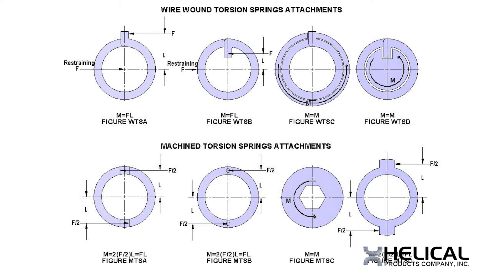The third diagram shows an internal hex attachment. This class of attachment is very effective in providing a pure moment. It could also be a spline, a round shaft with a keyway or keyways — all of these provide pure moments. The last diagram on the lower right demonstrates the use of two external tangs. This classic use of a couple or pure moment attachment is free of the need of a resolving force.